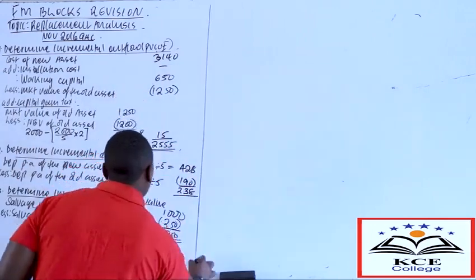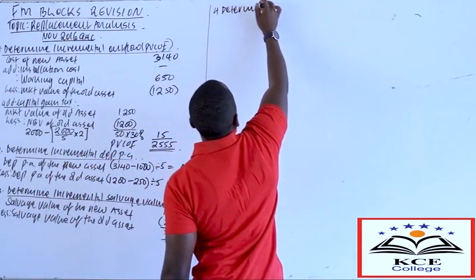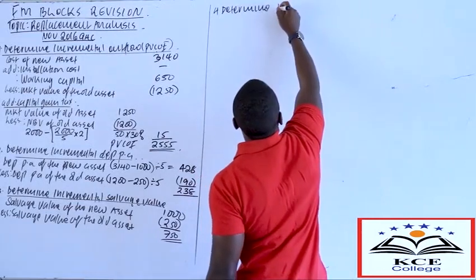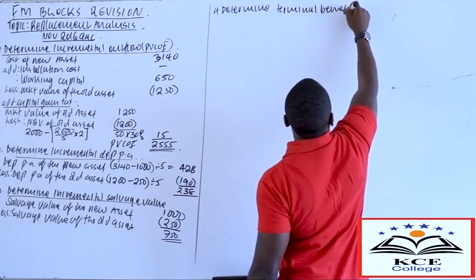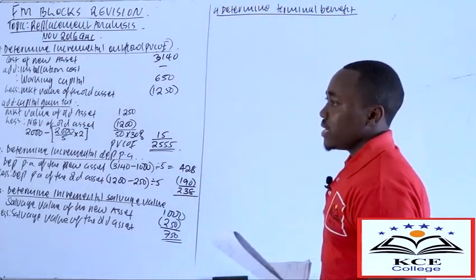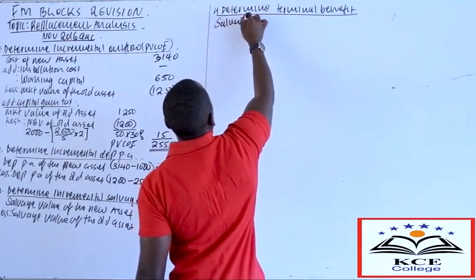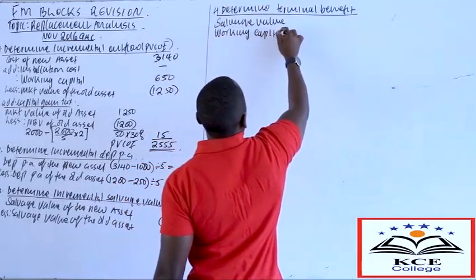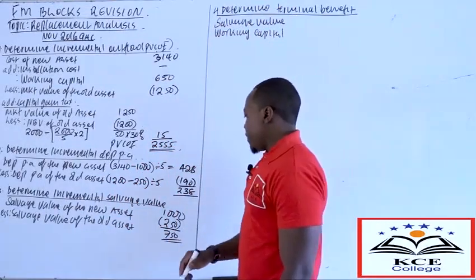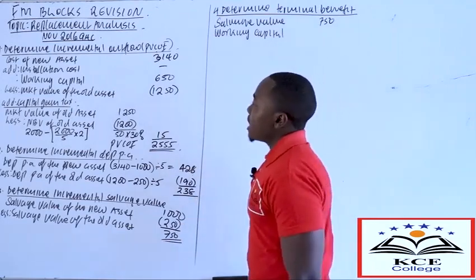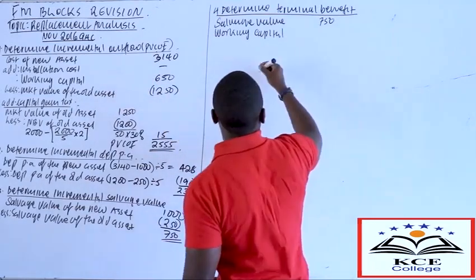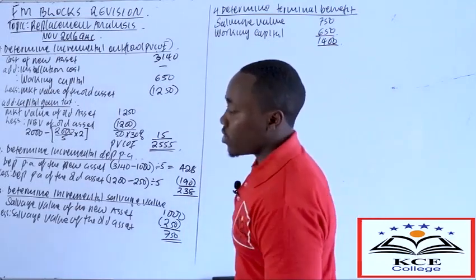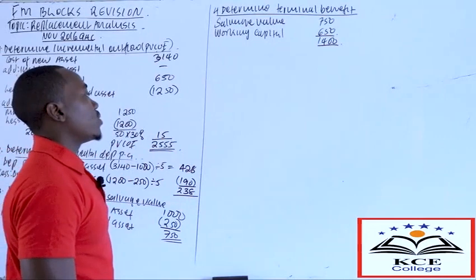Step four: determine the terminal benefits. Terminal benefit is made up of two elements: the incremental salvage value and working capital recovery. The incremental salvage value from step three is 750,000 and the working capital requirement was 650,000. Therefore the total terminal benefit is 750,000 + 650,000 = 1,400,000, which will be realized at the end of the economic life in year five.